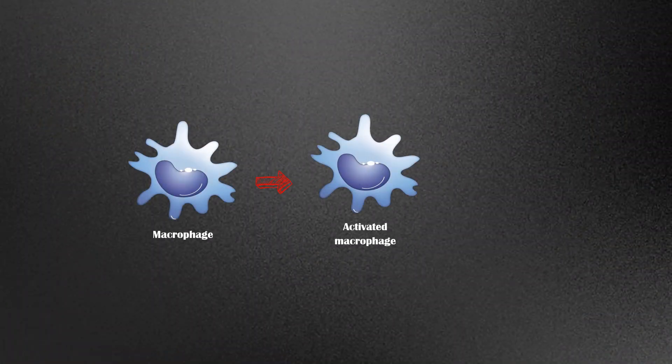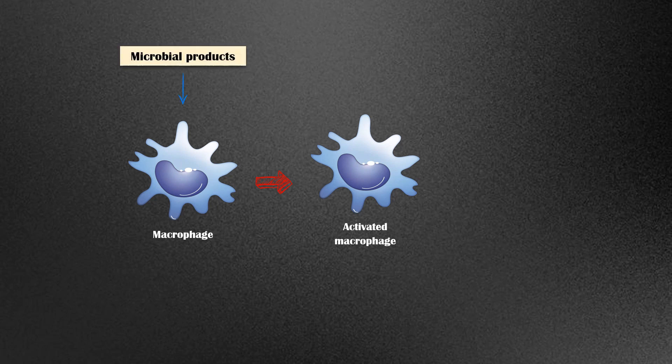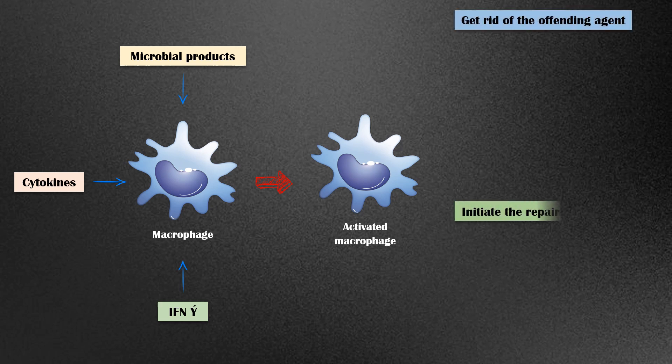A macrophage must be activated to elicit its functions. Microbial products, cytokines, and interferon gamma act as stimuli for macrophage activation. Activated macrophage has two major functions: one is to get rid of the offending agent, and the other one is to initiate the repairing process.